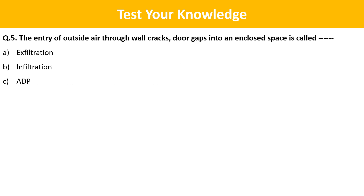Question 5: The entry of outside air through wall cracks and door gaps into an enclosed space is called? Option A: Exfiltration. Option B: Infiltration. Option C: ADP. The correct answer is Option B — Infiltration.